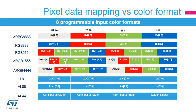Direct color formats include ARGB8888, RGB888, RGB565, ARGB1555, and ARGB4444. Indirect color formats include L8 (8-bit luminance or CLUT), AL44 (4-bit alpha and 4-bit luminance), and AL88 (8-bit alpha and 8-bit luminance).